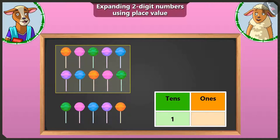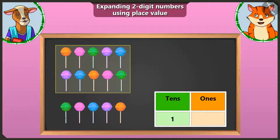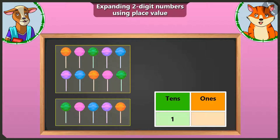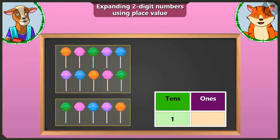Now tell me Billy, besides the group of ten here, how many lollipops are left with which a group of ten cannot be made? Now see, there are one, two, three, four and five lollipops left with which a group of ten cannot be made. Yes, you are right, Billy. We will write the remaining five lollipops in the box of ones.